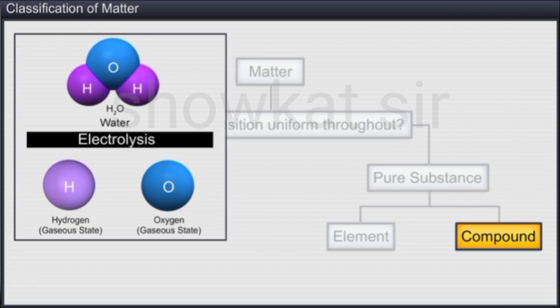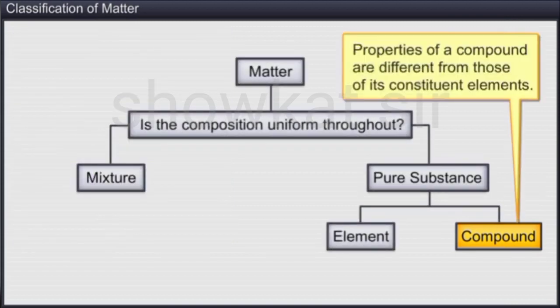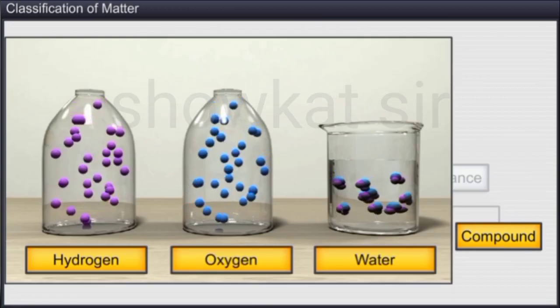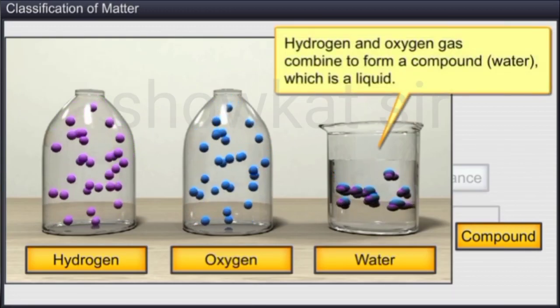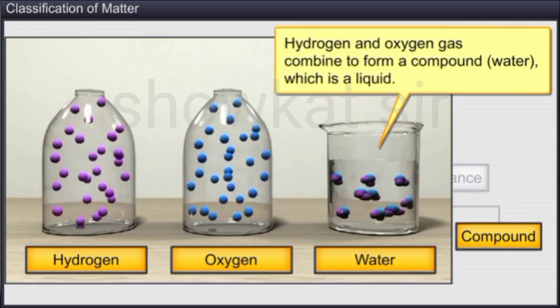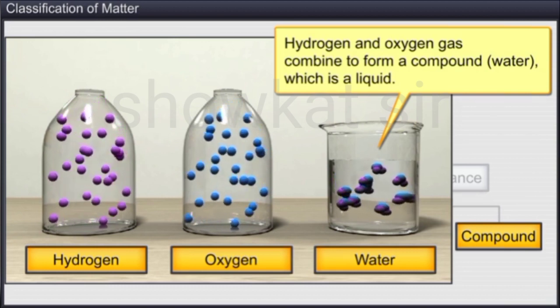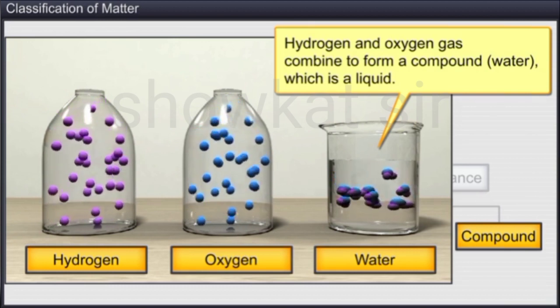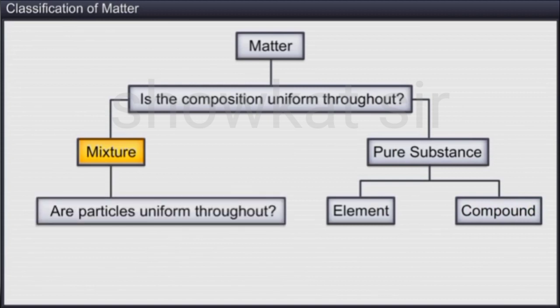With the help of electrolysis, we can get the two gases hydrogen and oxygen from water. In compounds, properties are totally different from those of their constituents. Hydrogen is a gas and combustible. Oxygen supports combustion and is also a gas. But water is a liquid and is neither combustible nor a supporter of combustion. Instead, water is used as a fire extinguisher.